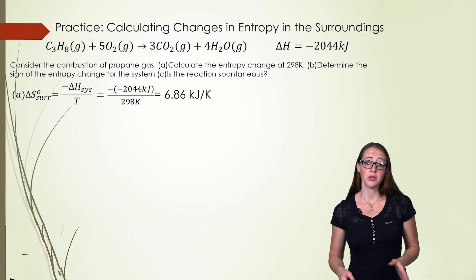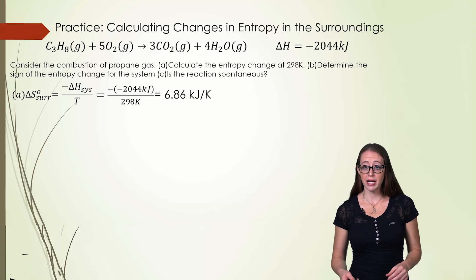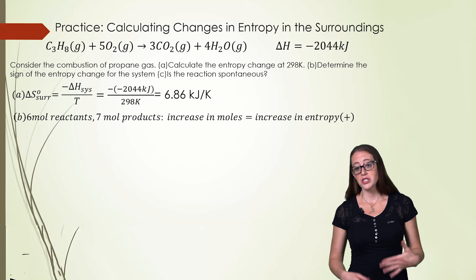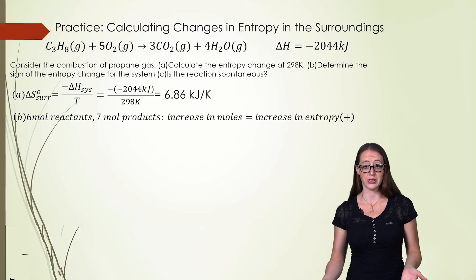For part B we should note that all of the species are gases but we have six moles of reactants, seven moles of products. This increase in moles means the entropy of the system increases as well.